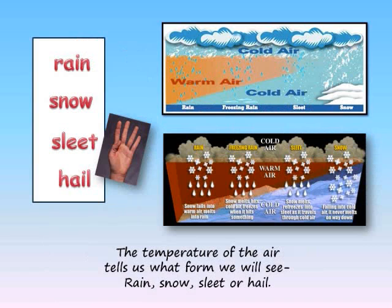The temperature of the air tells us what form we will see: rain, snow, sleet, or hail.